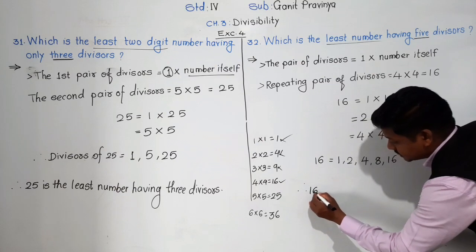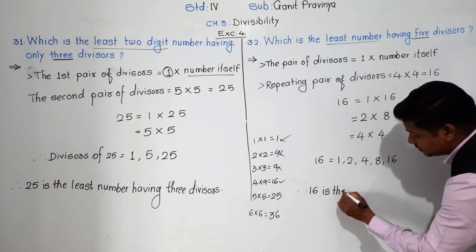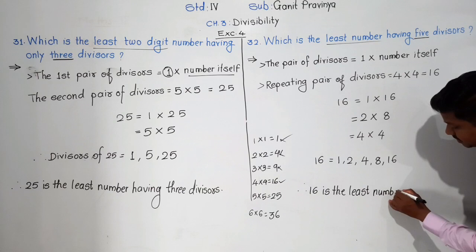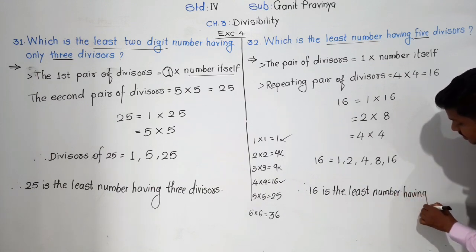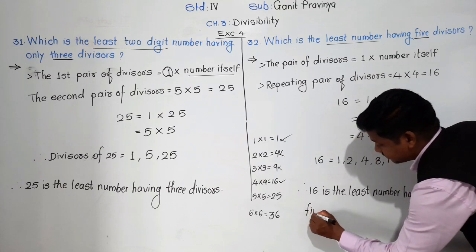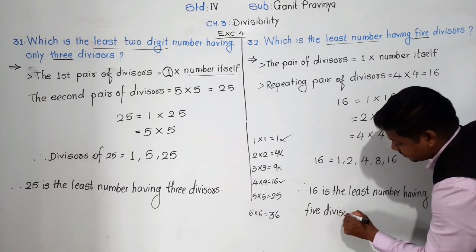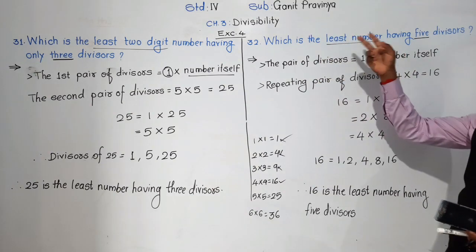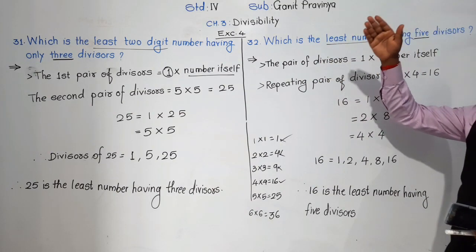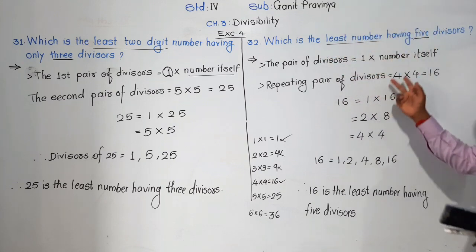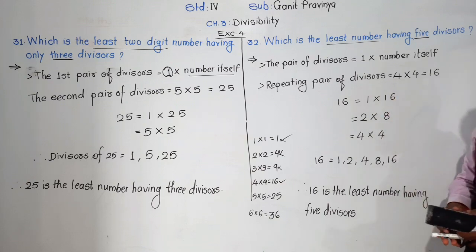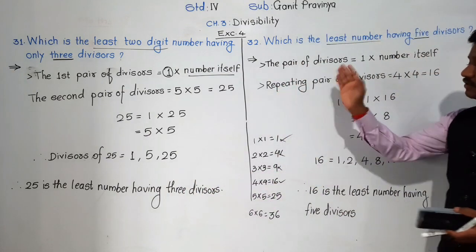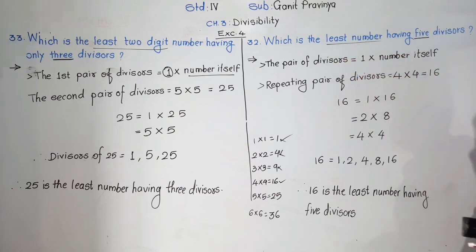Note that sometimes they will ask which is the greatest or smallest two-digit number having 5 divisors. 16 is also the smallest two-digit number having 5 divisors. And the smallest two-digit number having 3 divisors is 25, as we found earlier. Pause this video and write this in your notebook.